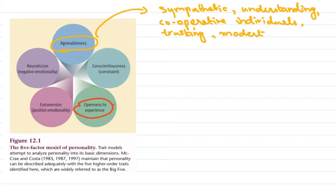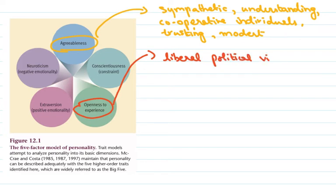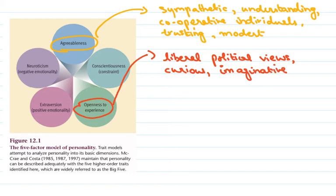When we have openness to experience, this factor of personality is sometimes correlated with a person's political views. Someone who scores high on openness to experience usually has more liberal political views. These individuals are also open to a great variety of experiences. Individuals who score high on openness to experience are very curious, inquisitive, and very imaginative, and they might hold very unconventional views. This is what openness to experience is about.